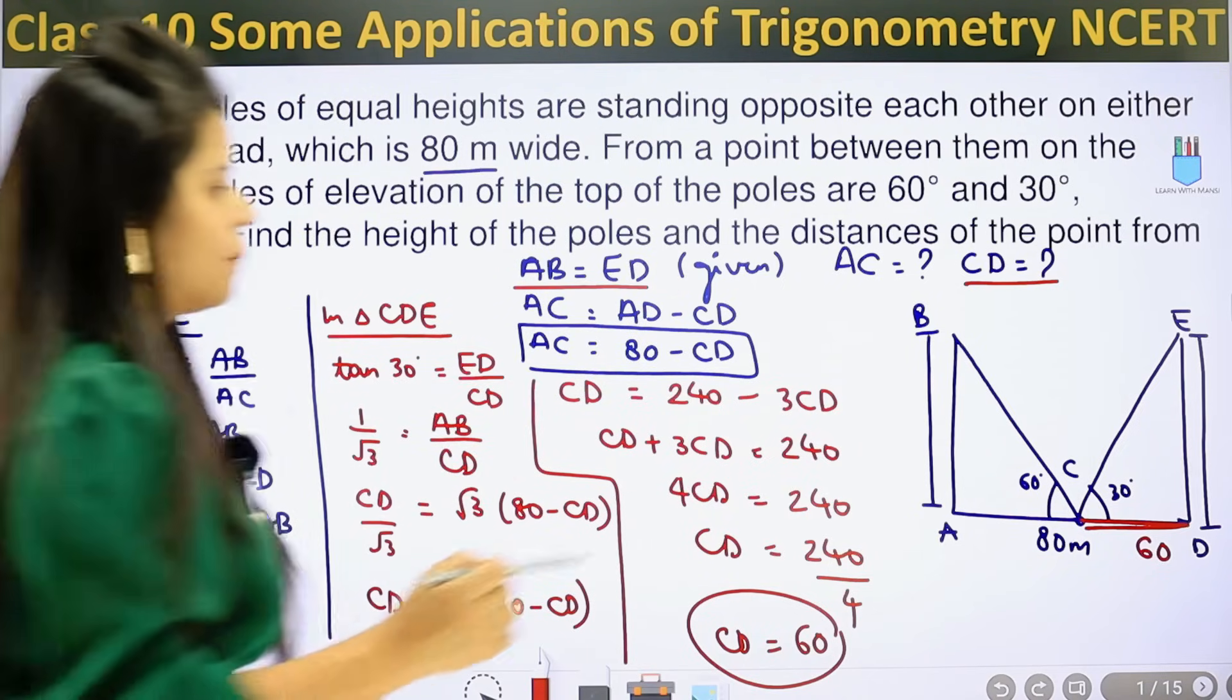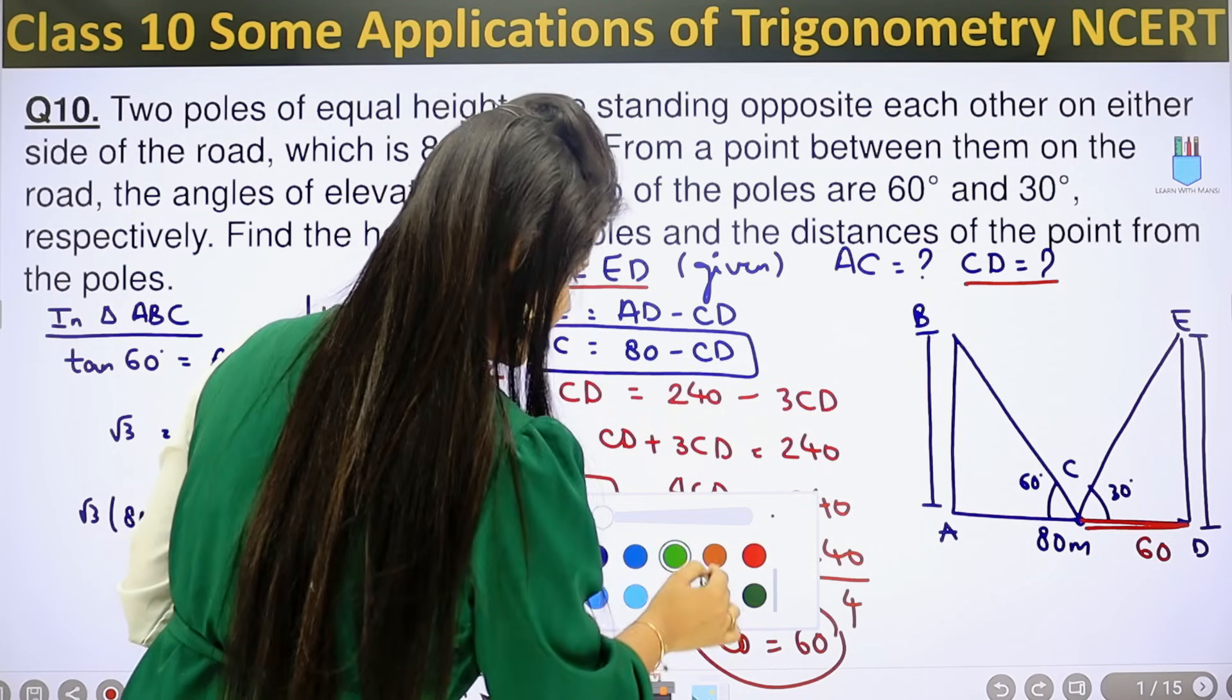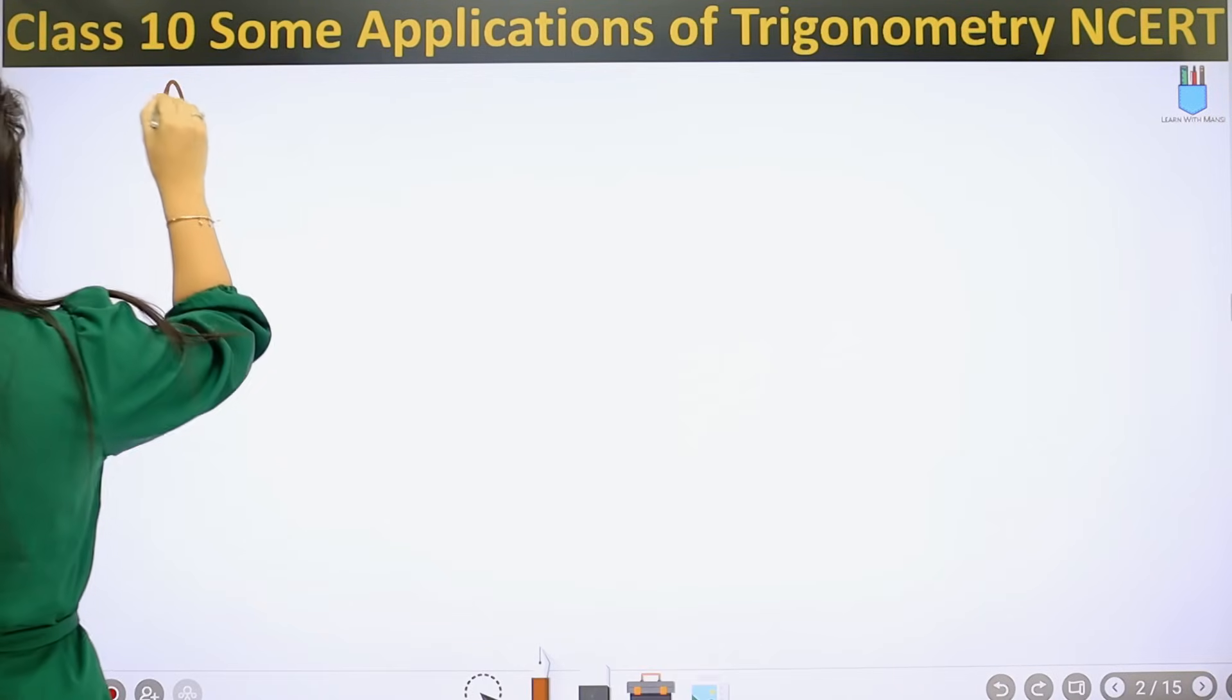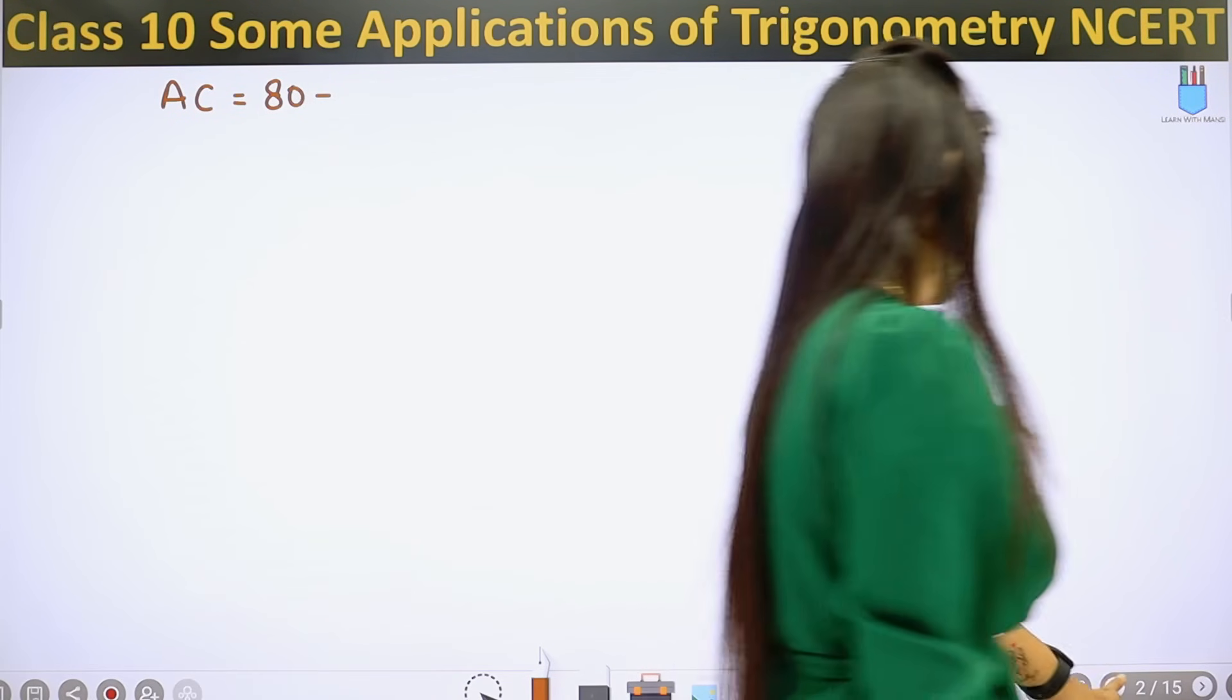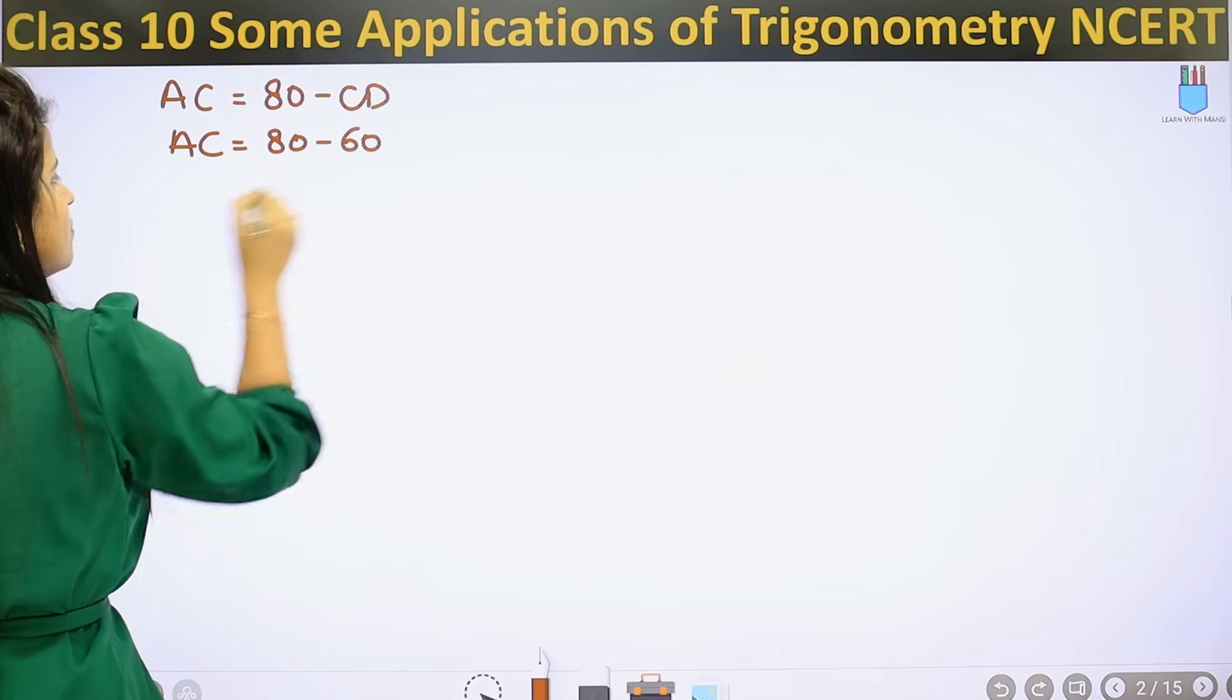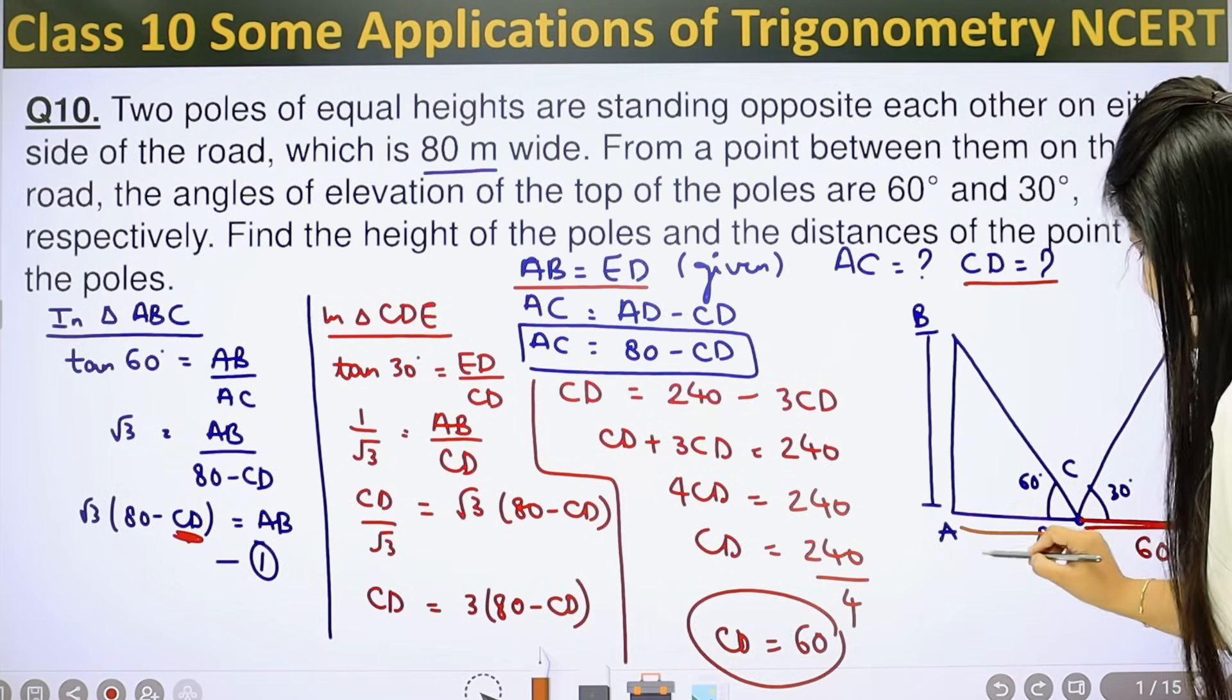So this is out. Now we know if this full is 80 and that is 60, then how much is left? 20 is left. But let's show it properly. How will we find AC? I have AC equals 80 minus CD. AC I've already written as 80 minus CD. So CD we have now found. So AC equals 80 minus 60, which will be 20. So AC has come, this is 20 meters.